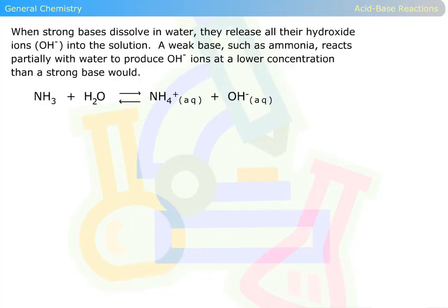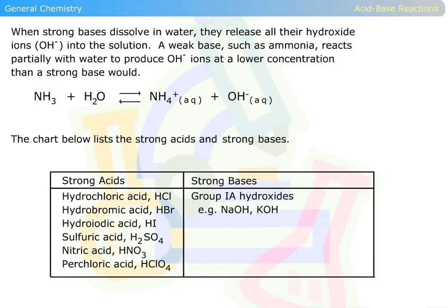When strong bases dissolve in water, they release all their hydroxide ions into the solution. A weak base, such as ammonia, reacts partially with water to produce OH- ions at a lower concentration than a strong base would, as seen in this formula below. The chart below lists the strong acids and strong bases.